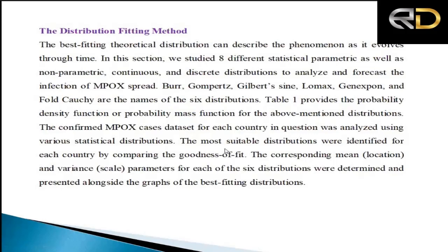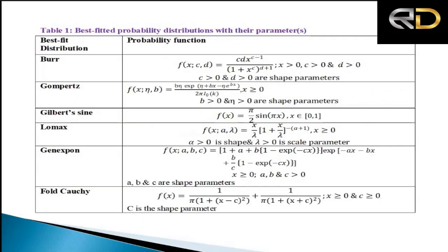There are many theoretical and sampling distributions, including discrete and continuous distributions as well as parametric and non-parametric distributions. We have fitted approximately 123 probability distributions to the top 10 countries of the world with the highest monkeypox incidences, and identified the best-fitted distribution for each of those countries.